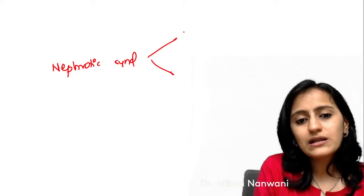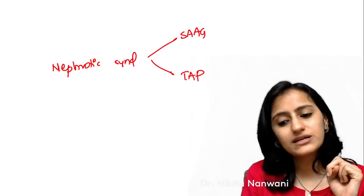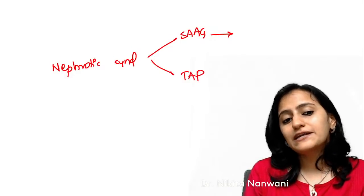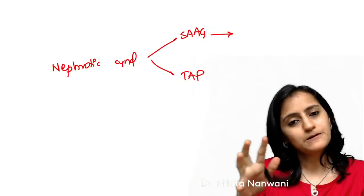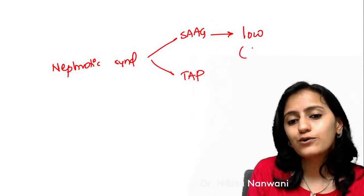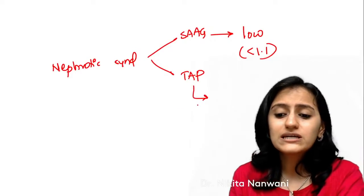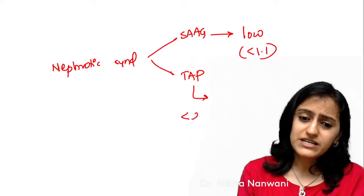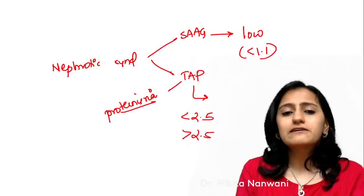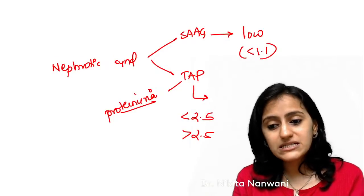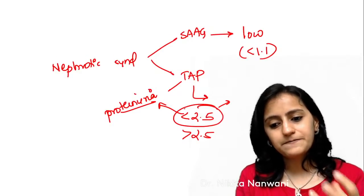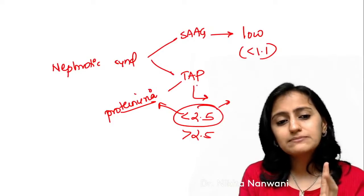In nephrotic syndrome, how will SAAG be, and how will total ascitic protein be? Nephrotic syndrome does not cause portal hypertension, so SAAG will be low — less than 1.1. Total ascitic protein will be less than 2.5 because there is proteinuria. Even though liver function is normal, protein is being excreted. So in nephrotic syndrome: both SAAG and total ascitic protein are low.